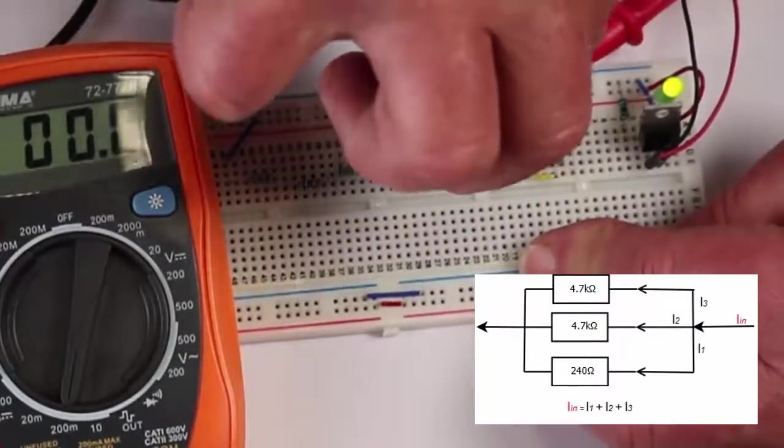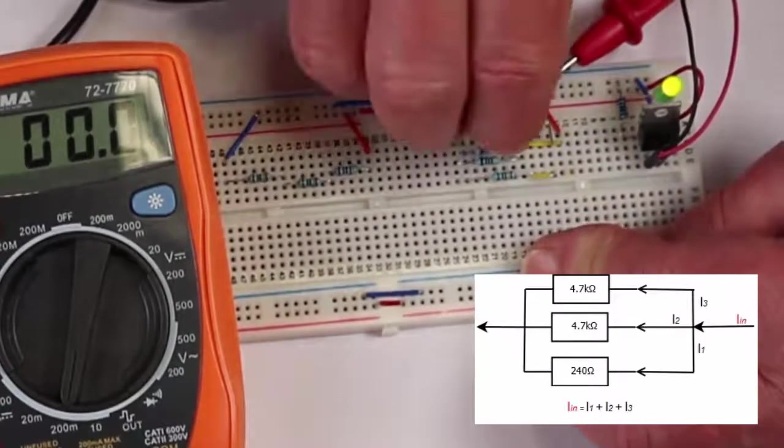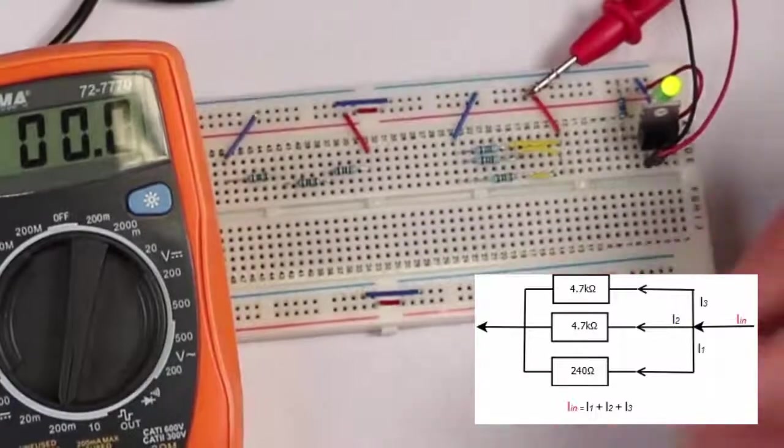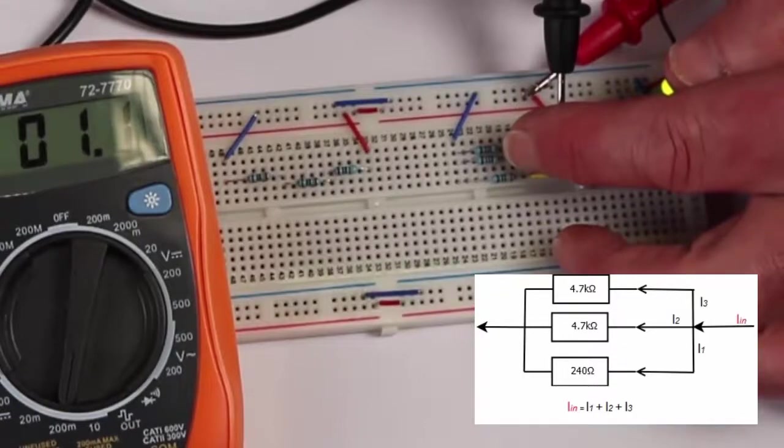And now we can check the current through one of the 4.7k resistors. We see it's quite small but 1.1mA.